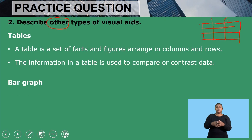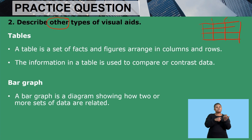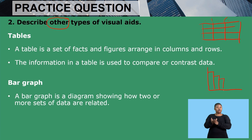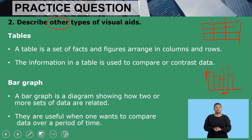Then we have a bar graph. A bar graph is a diagram showing how two or more sets of data are related. When we draw a bar graph, we have a Cartesian plane with a y-axis and an x-axis, and our bar graph has bars. It shows the relationship between the x-axis and the y-axis. Bar graphs are useful when one wants to compare data over a period of time.